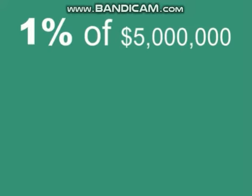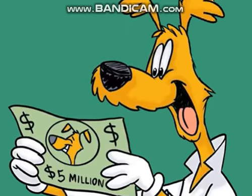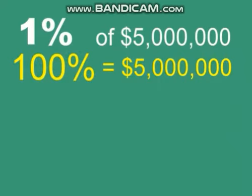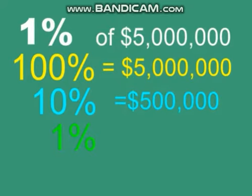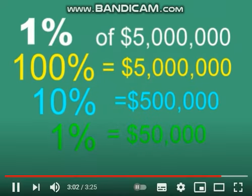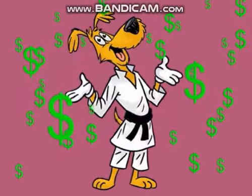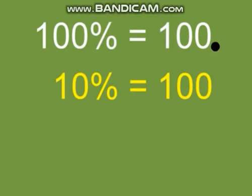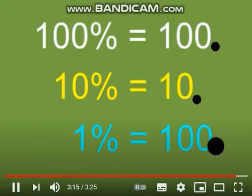Let's do one more! What is 1% of five million dollars? 100% of five million dollars is five million dollars. To find 10%, we just move the decimal one space to the left. To find 1%, we would move the decimal two spaces to the left. So fifty thousand dollars is 1% of five million dollars. Hopefully these tricks make it easier — keep practicing and you'll get better and faster.